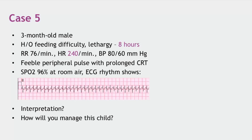Regarding the PALS tachyarrhythmia algorithm query: adenosine can be tried first even in an unstable narrow complex tachycardia if a patent IV line close to the heart is already in place — while preparing the defibrillator. However, do not waste time placing an IV line just to give adenosine if one is not already present.